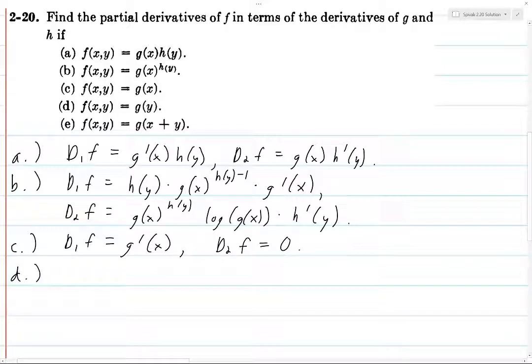And then part d is just the reverse of this. Since it's a function only of y, taking the derivative with respect to x gives you 0. And taking the derivative with respect to y will give you g prime of y.